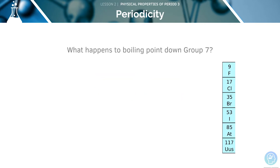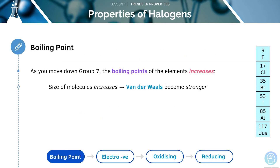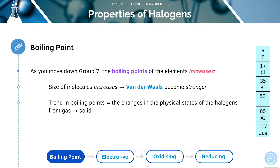What happens to the boiling point down group seven? It will increase as we go down the group. As we can see here, the size of the molecules increases as we head down the group. The van der Waals forces are going to become stronger as the size of the molecule increases. The bigger the molecule, the more electrons that are present and therefore the stronger the van der Waals forces. The trend in boiling points is represented by the changes in the physical states of the halogens, going from a gas into a solid.